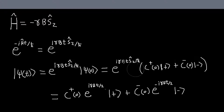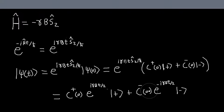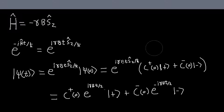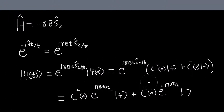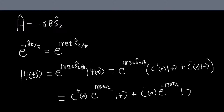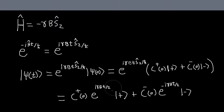Similarly, when I act this operator on the minus state, Sz will just become minus h-bar over two, so I get this. And that is it — we're done. In just two lines we've solved this problem. Whereas before, using the Schrödinger equation, we got a coupled system of differential equations that we had to solve. It wasn't too bad, but this is certainly much easier.